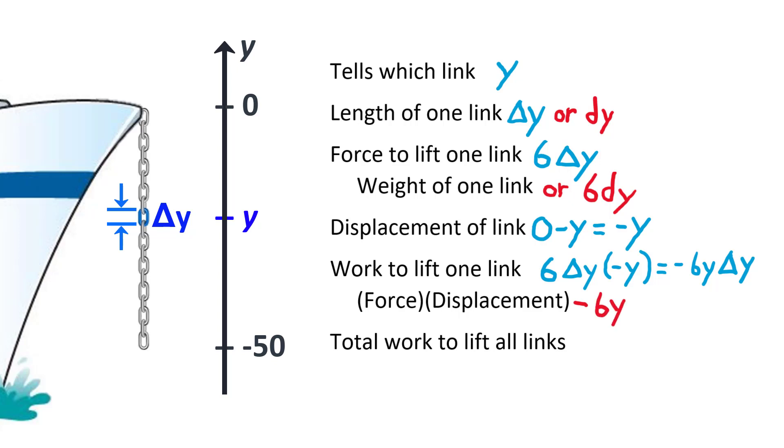To add up the work to lift all the links, we integrate. Our variable of integration is y, so the limits of integration must be values of y. The bottom small bit of chain is at y equals negative 50, and the top small bit of chain is at y equals zero, so we integrate from negative 50 to zero.